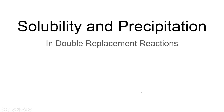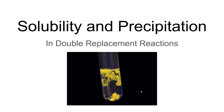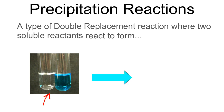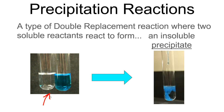Today we're going to learn about the importance of solubility versus precipitation in double replacement reactions, like the one to form this beautiful yellow precipitate. Precipitation reactions are just a type of double replacement reaction where two soluble reactants react to form an insoluble solid precipitate, like the cloudy blue solid precipitate shown here.